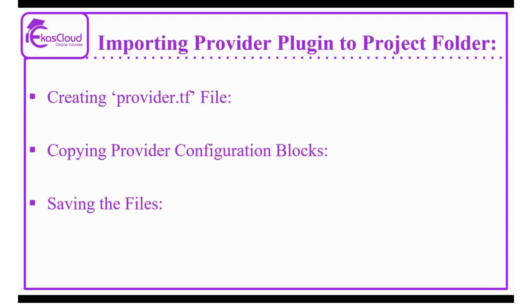Second, how to copy provider configuration blocks into the provider.tf file. You will need to copy the specific configuration blocks for the AWS provider from the Terraform registry. These configuration blocks define the provider and its settings, such as AWS access credentials and region. The last step is how to save the file. After copying the provider configuration blocks into your provider.tf file, save the file into your Terraform project folder. This ensures that Terraform recognizes the provider configuration when you run Terraform commands.